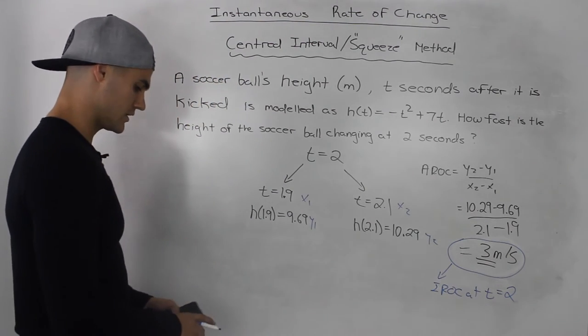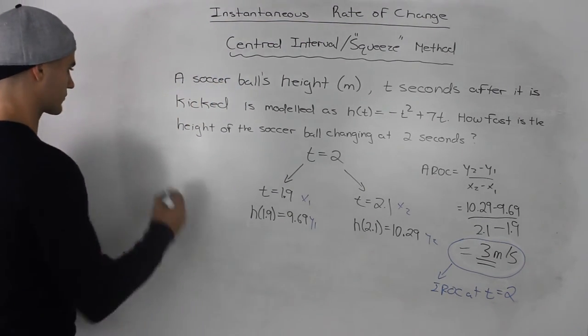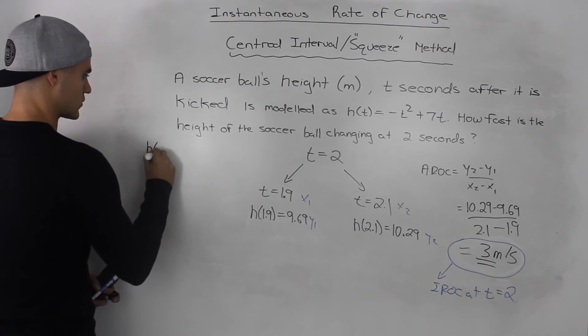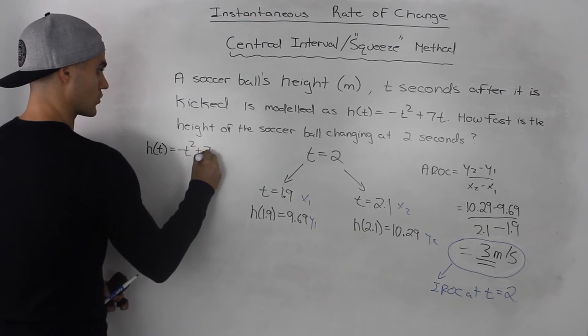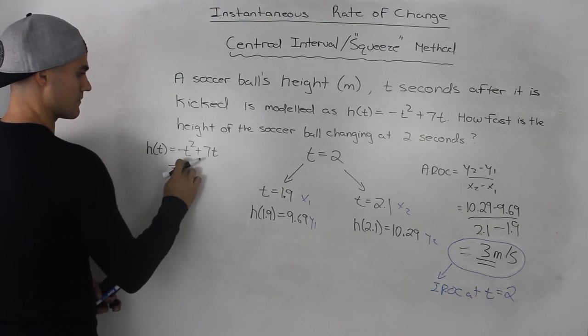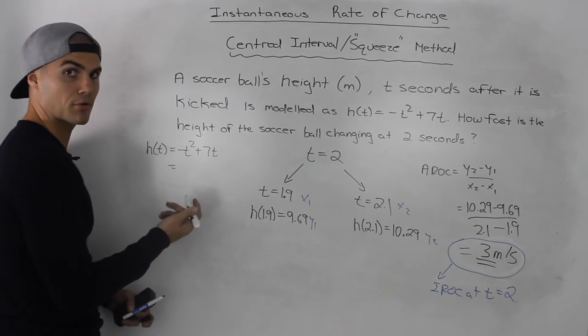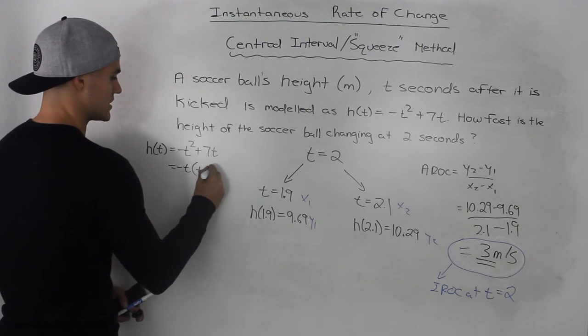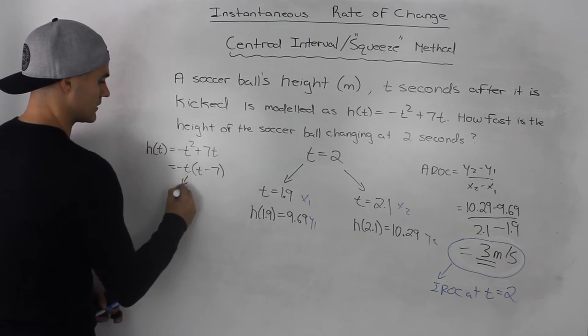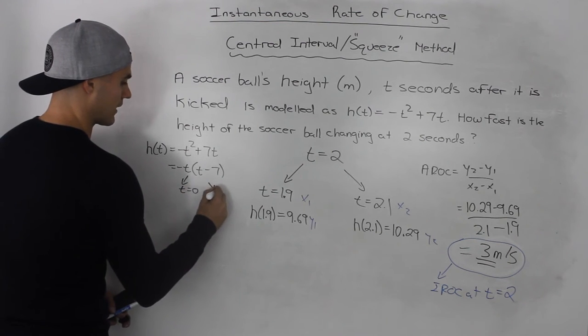Now if you want to see this graphically, let's quickly do this. So we have to graph this function here. Notice how it's a parabola. We could take out a negative t, so we'd be left with t - 7, meaning the t intercepts are 0 and 7.